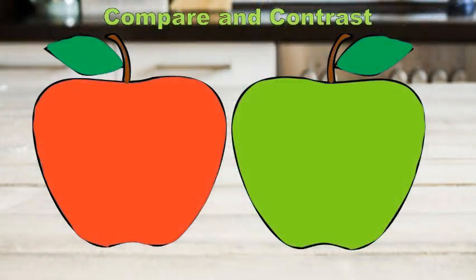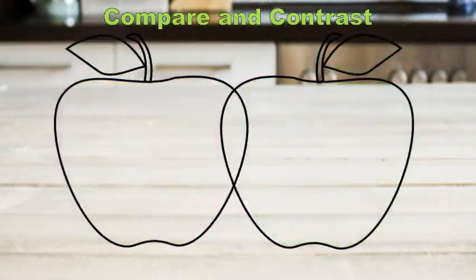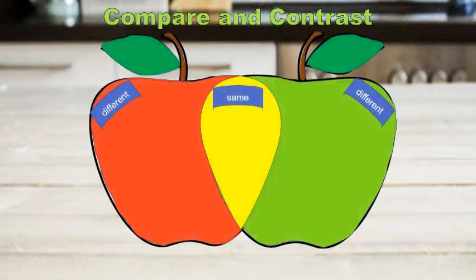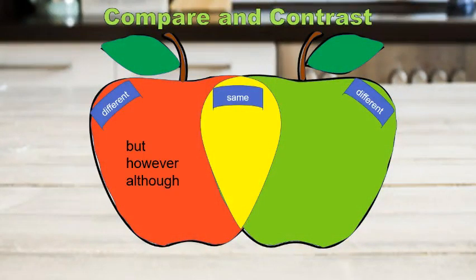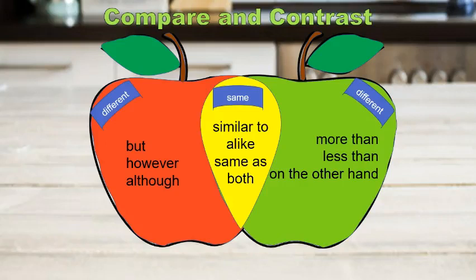Yet another way is through compare and contrast. Authors show how two things or ideas are the same or different, and they use keywords like but, however, although to show differences, and more than, less than, on the other hand to do the same. To show similarities, they use words like similar to or like, same as both. So look for these keywords when you come across a text that uses compare and contrast text structure.